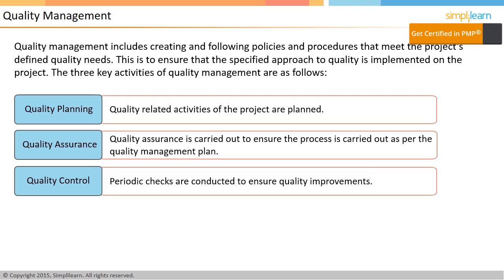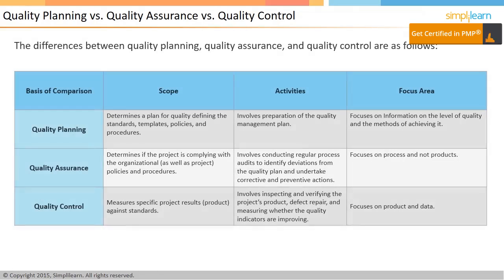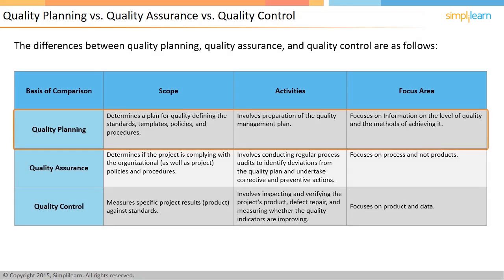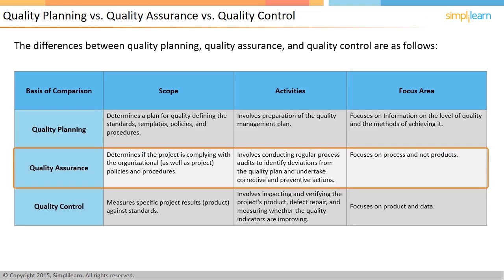In the next screen, let us look into the differences between the three aspects of quality management. It is important to understand the different kinds of activities that come under quality planning, quality assurance, and quality control. Once quality planning is done, the quality management plan is ready. This plan has standards, templates, policies, and procedures to be followed in the project, and it contains information on the level of quality being aimed at and the plan to achieve that level. Quality assurance activities ensure that the activities planned under the quality planning phase get executed for the project. Quality assurance determines if the project is complying with organizational as well as project policies and procedures. This is ensured by conducting regular process audits to identify deviations from what is planned in the quality management plan. These audits are generally done by the quality department of the organization. Quality assurance focuses on the process, not on specific products.